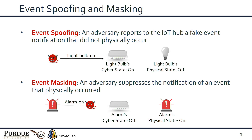The second attack is Event Masking, where an adversary suppresses or intercepts the notification of an event that physically occurred. For instance, although the alarm physically turns on, the adversary masks the notification of this event reaching the IoT hub. So the alarm's cyber state becomes off, but its physical state is on. Through this attack, the adversary can prevent the apps conditioned on the alarm on event from being triggered.